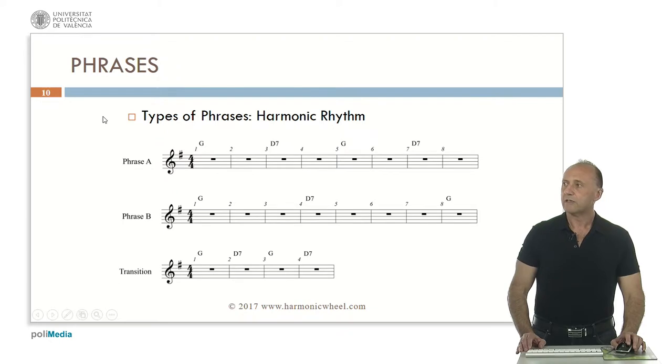Now we are going to compose several kinds of phrases which will be characterized by the harmonic rhythm. The harmonic rhythm is the rate at which the chords change in the musical composition. For example, phrase A will have a harmonic rhythm of one chord every 2 measures. The phrase B will have a harmonic rhythm of one chord every 3 or 4 measures ending with the tonic chord G major. And here this is a transition from phrase A to phrase B with a harmonic rhythm of one chord per measure.